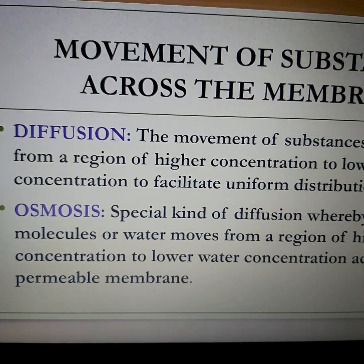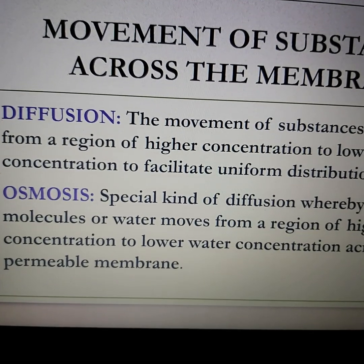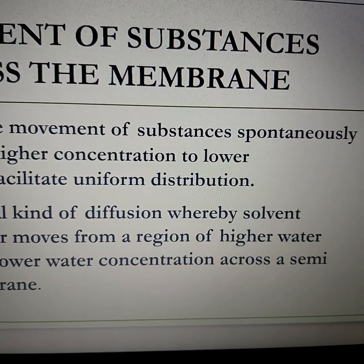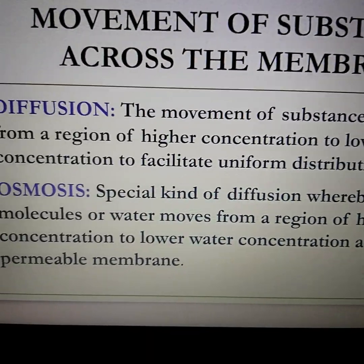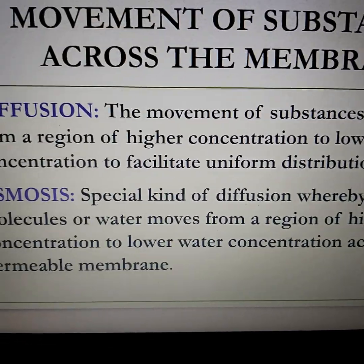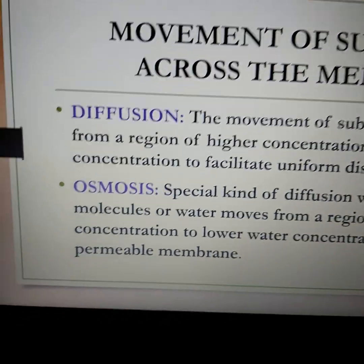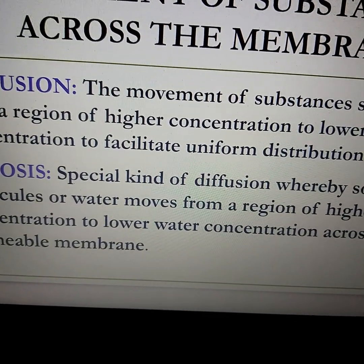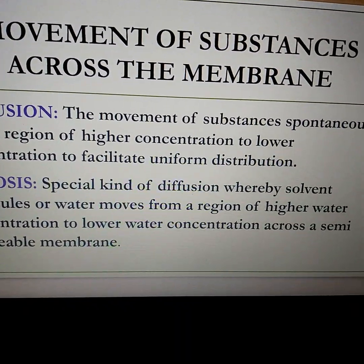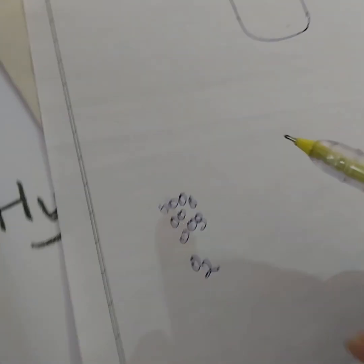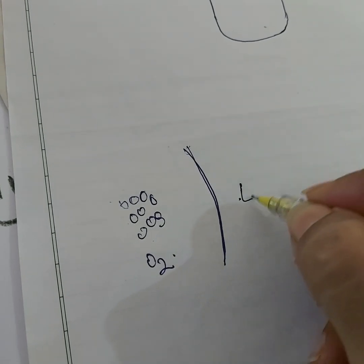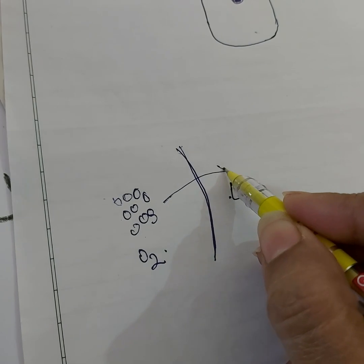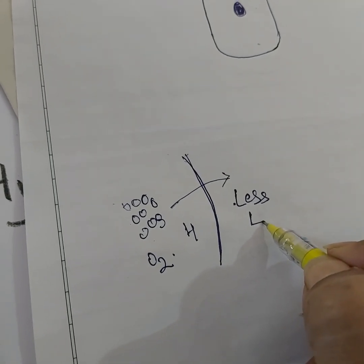Osmosis is slightly different in that larger particles cannot move. In this special kind of diffusion, only the solvent molecules — water molecules — move from a region of higher water concentration to lower water concentration across a semi-permeable membrane. For example, if oxygen concentration is high outside the cell and low inside, oxygen will spontaneously move from a region of higher concentration to lower concentration — this is diffusion.